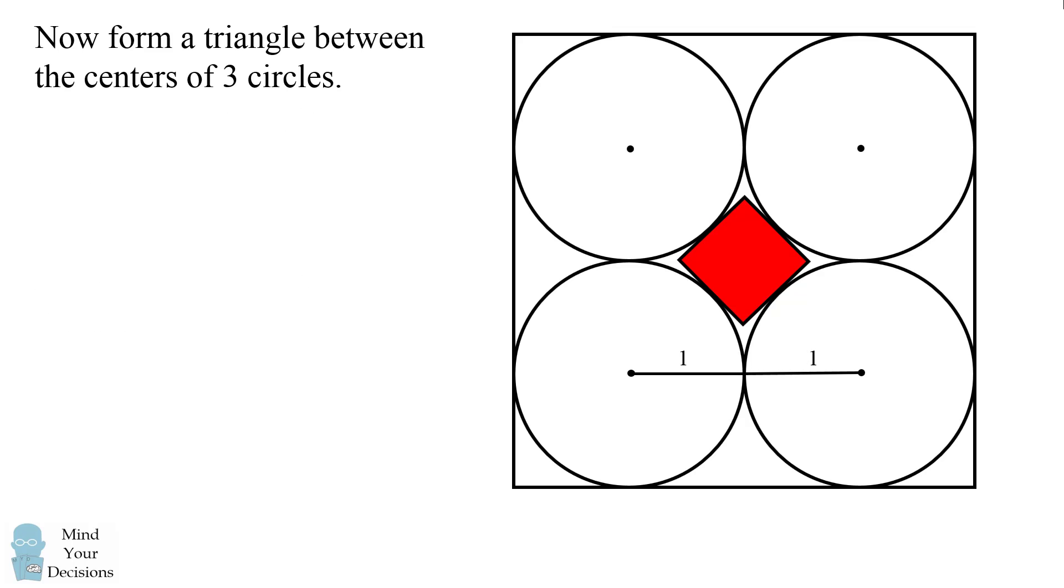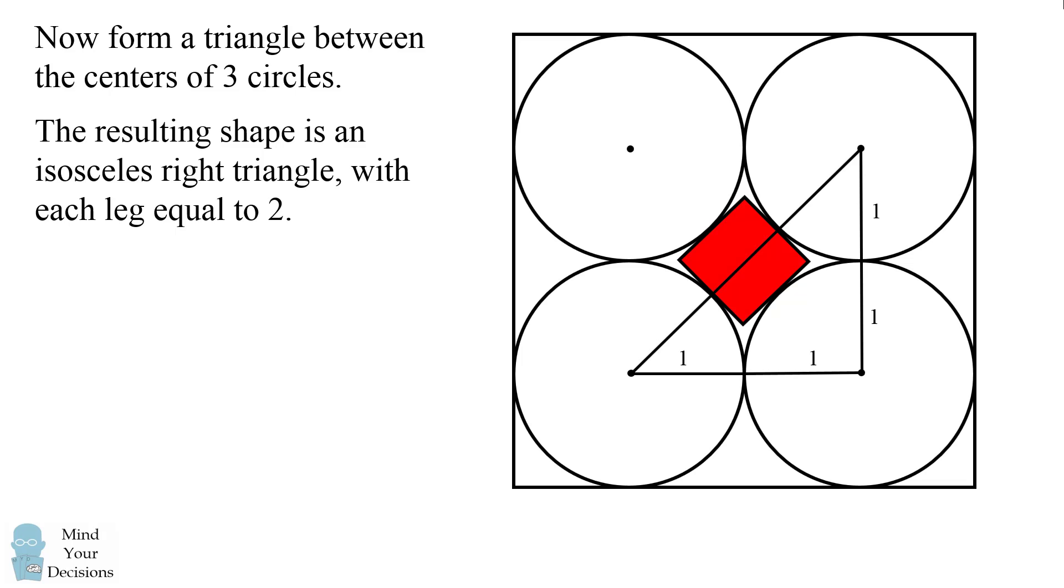Now let's form a triangle between the centers of three circles. This will be an isosceles right triangle where each leg is equal to two. The hypotenuse of this isosceles right triangle will be two times the square root of two. You can solve for this by the Pythagorean theorem.